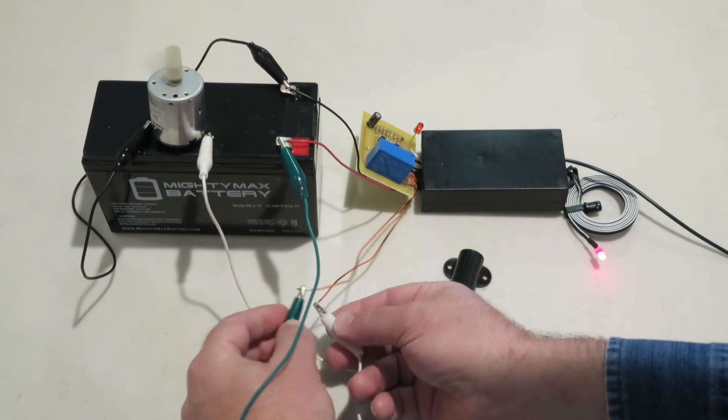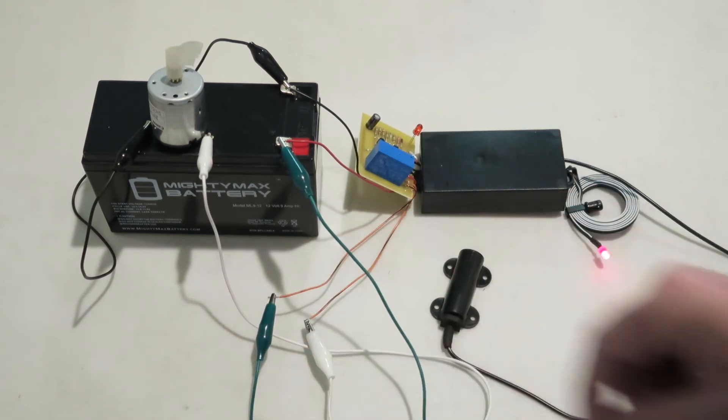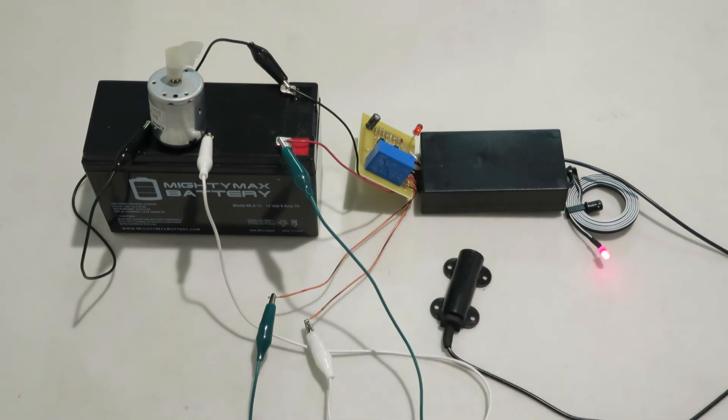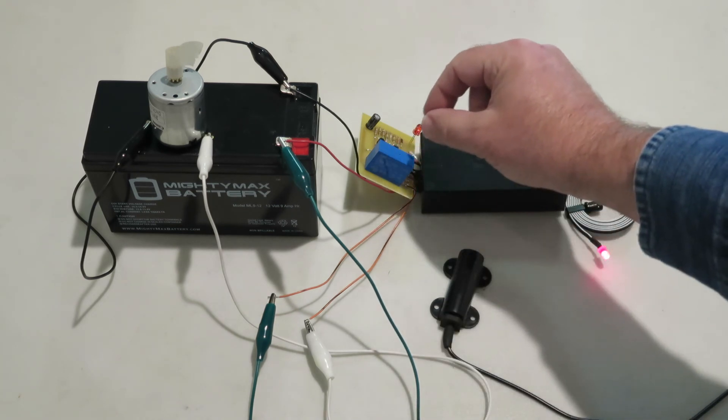Now let's have this relay collapse. All we have to do is bring the key fob near the sensor. It's going to collapse the relay, and the relay will then complete the circuit.